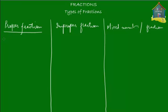Every fraction has got two numbers: there's a number at the top called the numerator and a number at the bottom called the denominator. In a proper fraction, the numerator or the top number is smaller than the denominator. For example, 3 upon 5, or 4 upon 5, or 12 upon 17 — these are all examples of proper fractions. In each of these examples, the top number is smaller than the bottom number, and hence these are all proper fractions.